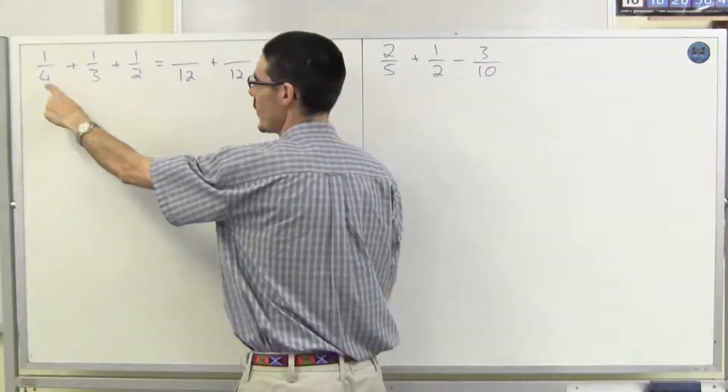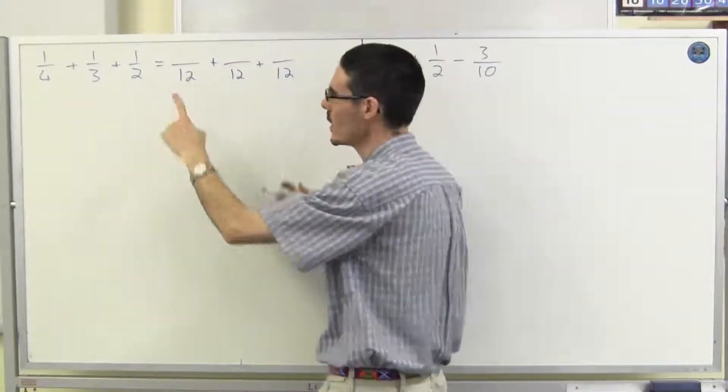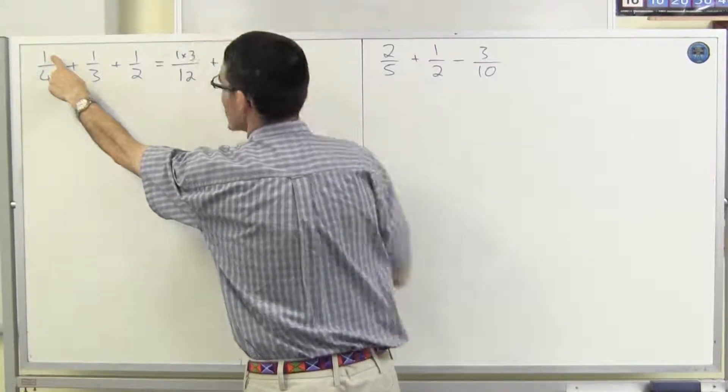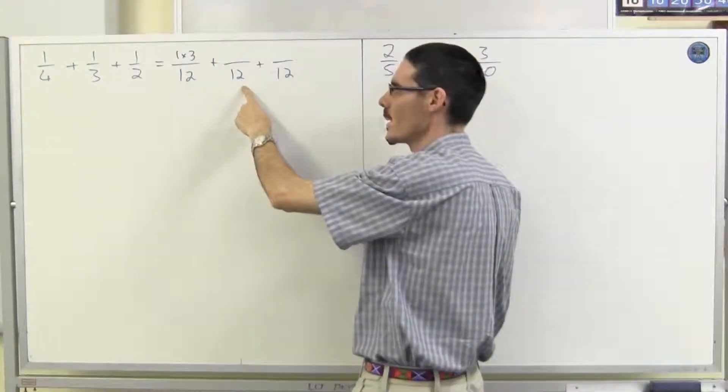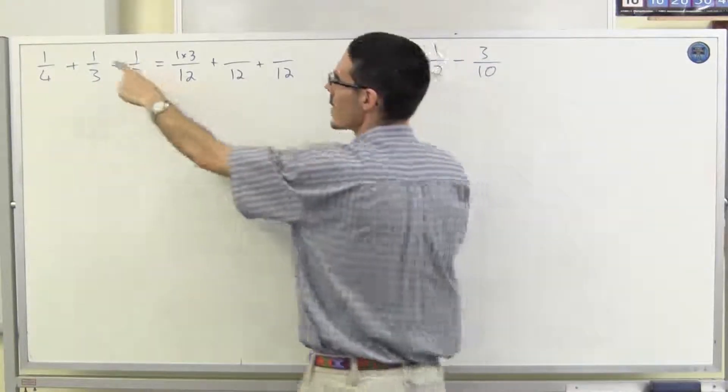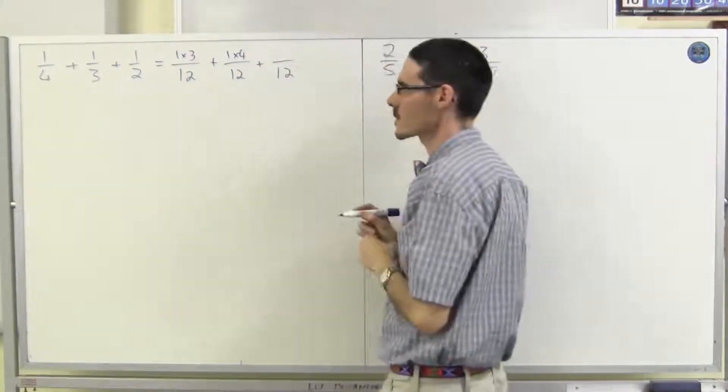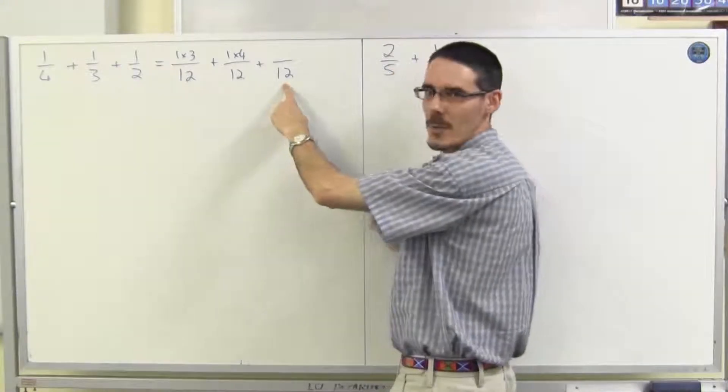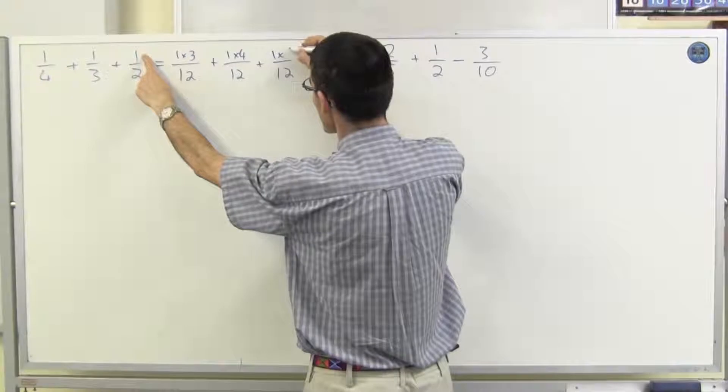Okay, what's the value of 4 to get 12? I multiply it by 3, so at the top I'm going to have 1 times 3. What's the value of 3 to get 12? I multiply it by 4, so at the top I'm going to have 1 times 4. And what's the value of 2 to get 12? I multiply it by 6, so at the top I'm going to have 1 times 6.